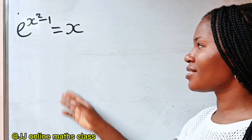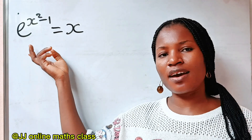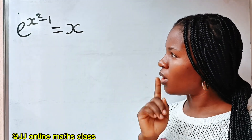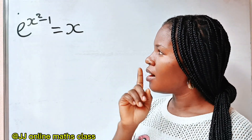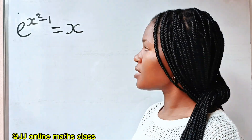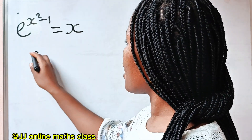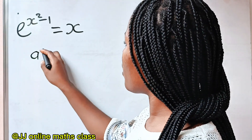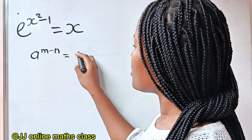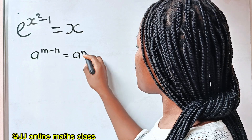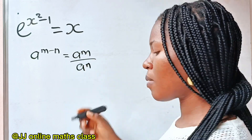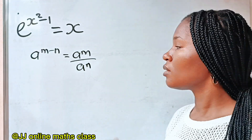Hi, wonderful friends. Let's find x first of all. Remember the law of exponents that states that a to the power of m minus n is equal to a to the power of m divided by a to the power of n.